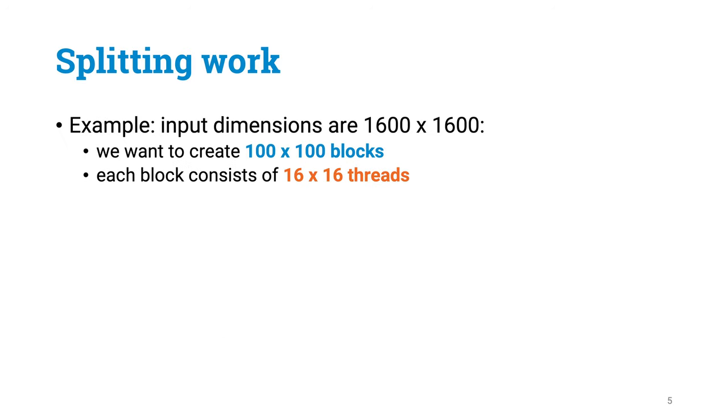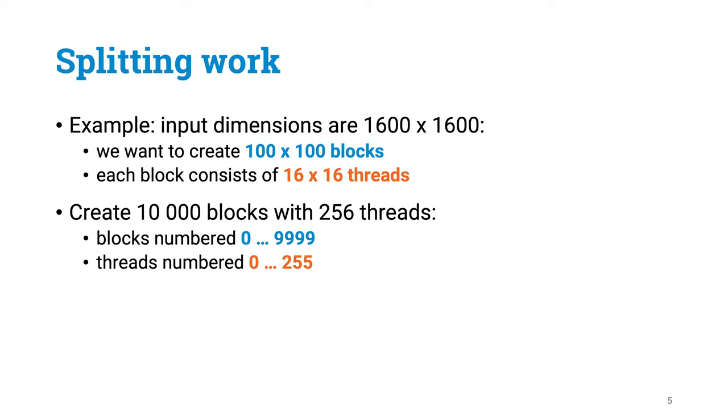So for instance if n is 1600, we will need to create 100 by 100 blocks, each with 16 by 16 threads. Now if we do what we already learned, we can create 10,000 blocks with 256 threads each. Then as we know, blocks will be numbered from 0 to 9,999, and threads within a block will be numbered from 0 to 255.